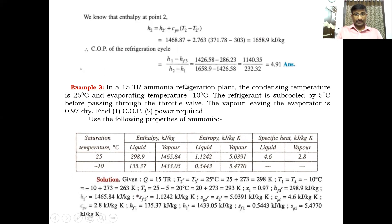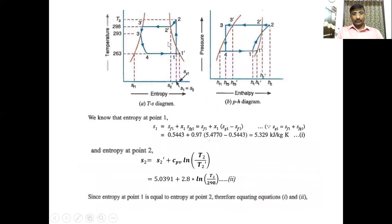We need to find the enthalpy at each cycle point to calculate COP and power. For point 1, which is in the wet region (dryness fraction 0.97), use the entropy formula: S1 = SF1 + X1 × SFG1 = SF1 + X1 × (SG1 − SF1). After substituting values: 0.5443 + 0.97 × (5.470 − 0.5443) = 5.329 kJ/kg·K. This is the entropy at point 1.